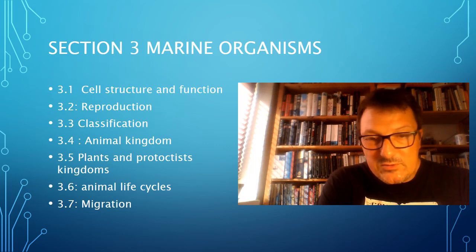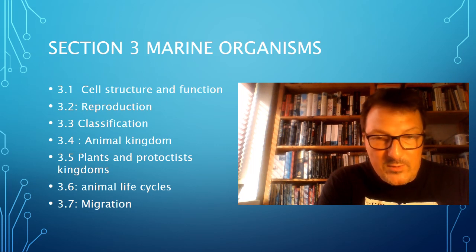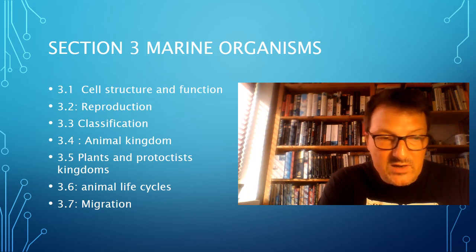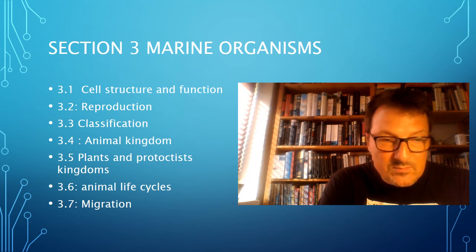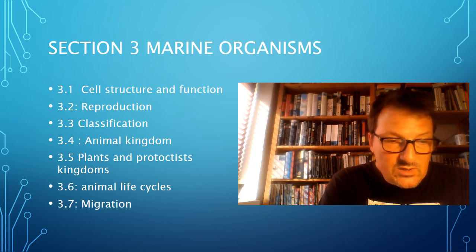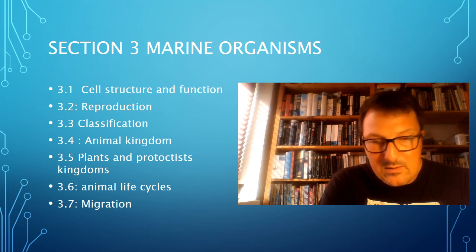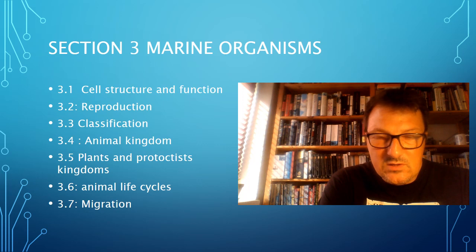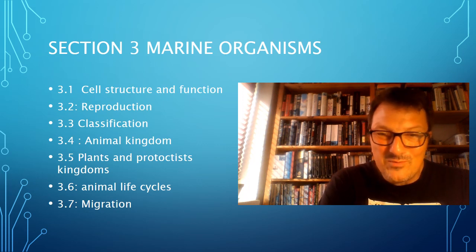3.2 is about reproduction, looking at the difference between asexual and sexual reproduction in marine organisms. 3.3 takes us into classification — learning how to identify different groups, spending some time learning how to use a binomial naming system, stating the three domains used in classification, and also looking at the different kingdoms of eukaryotes. So again, very much classic biology, and I hope for most people, great fun.